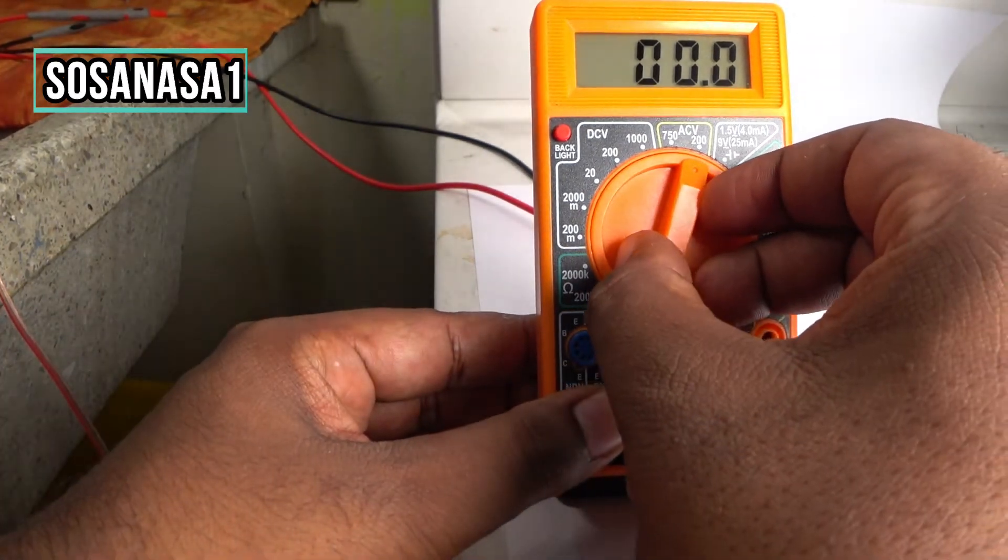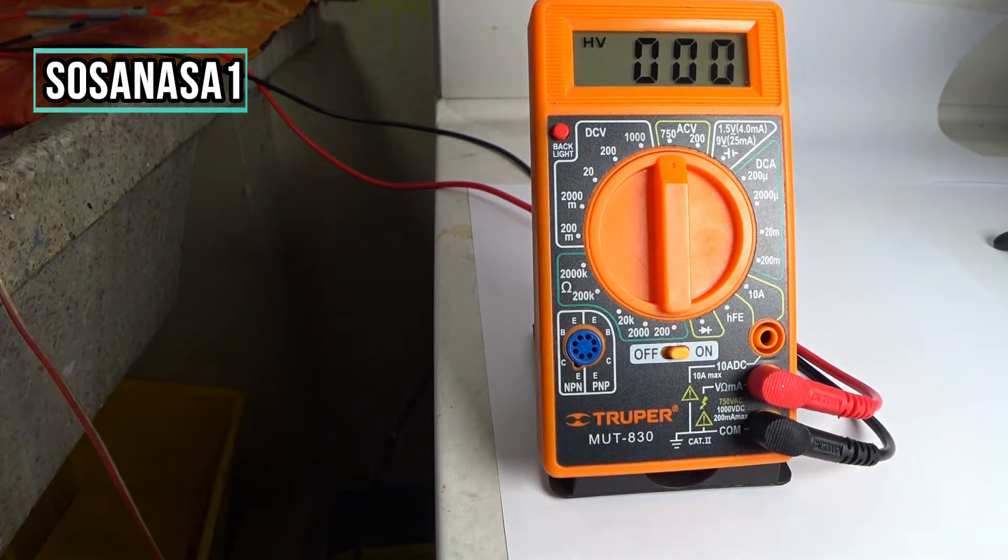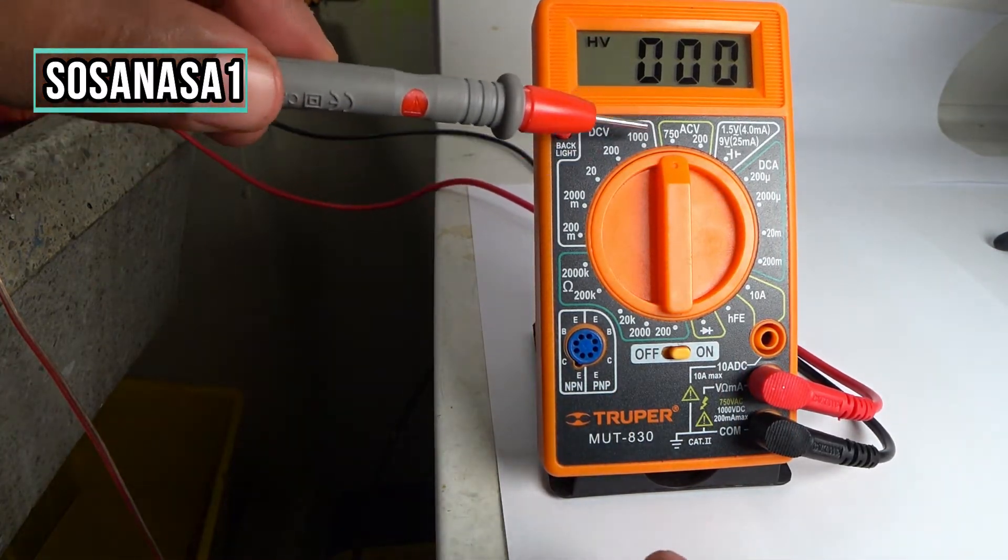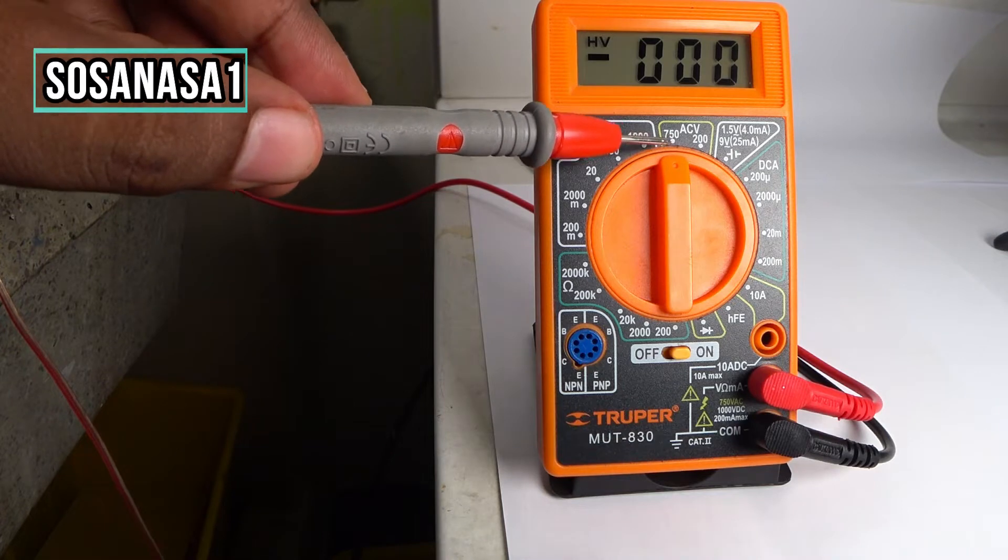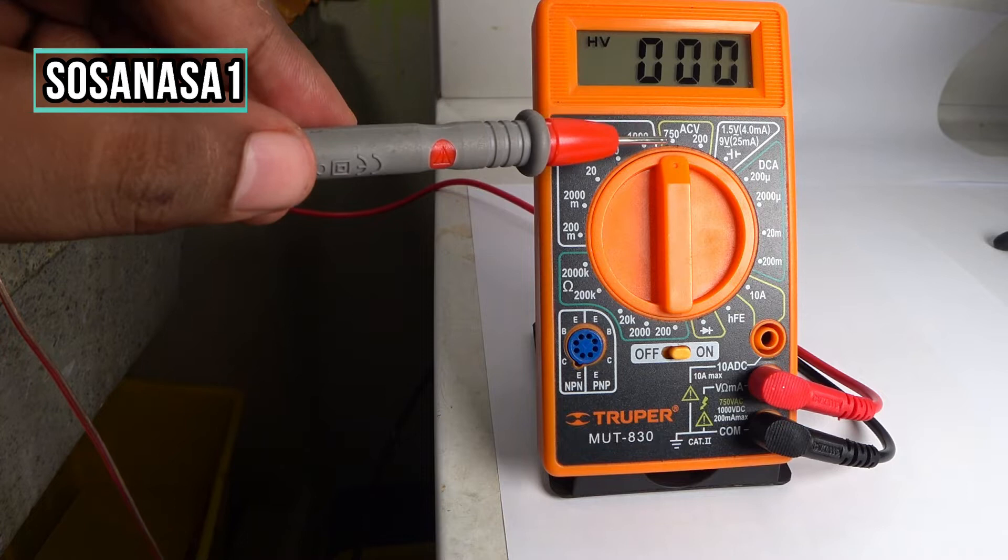Set it to 750 volts, I mean in this part, because now we are going to measure 200 volts more or less. 750 volts is higher than 200 volts.